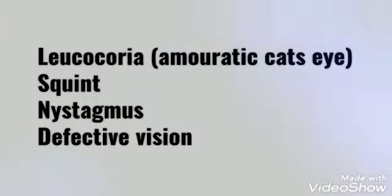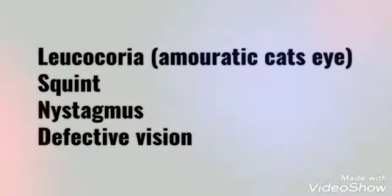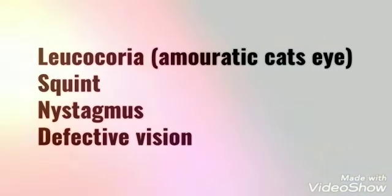Now let's look at the clinical features of retinoblastoma. It comes in two stages: the leukocoria stage and the red eye stage. The leukocoria stage is also called the silent stage because it is less painful. Leukocoria, strabismus, and defective vision all present in this stage. Leukocoria gives a white reflex, which is why it is also called the cat's eye appearance.